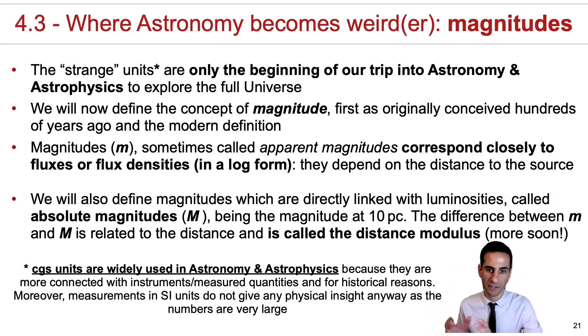Now, just to point out before you really hate astronomers for using CGS units, they are widely used in astronomy and astrophysics on one hand for historical reasons, but also because they can be quite useful actually. They're more related with the typical sizes of instruments that have centimeter squared areas and not meter squared areas.